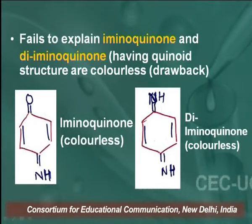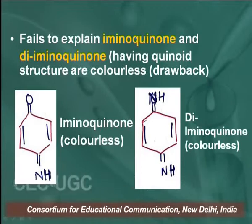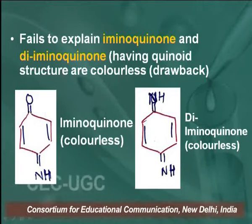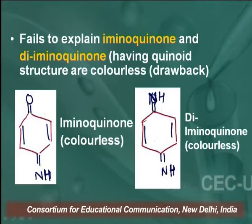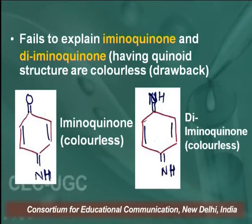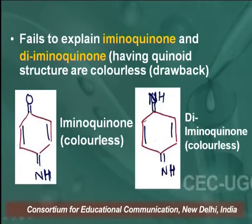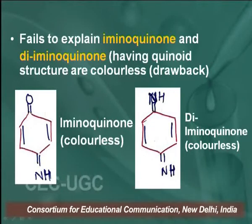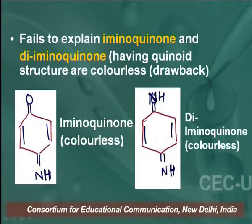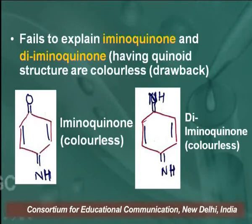However, Armstrong theory fails to explain cases where the oxygen bonded to the benzene ring is replaced by other groups like iminoquinones and diiminoquinones. These have a quinoid structure but are colourless. So that was a drawback of this Armstrong theory — both iminoquinone and diiminoquinone are colourless.